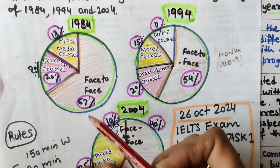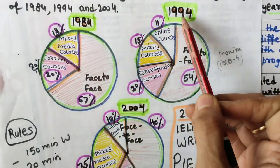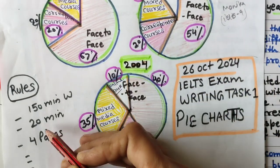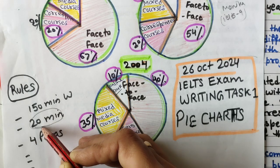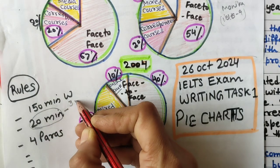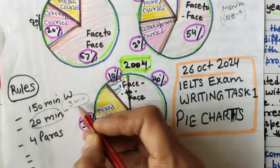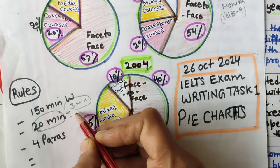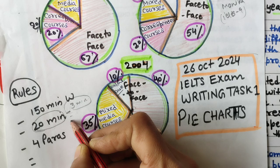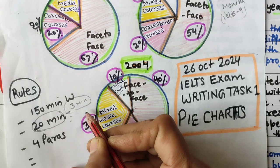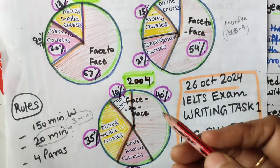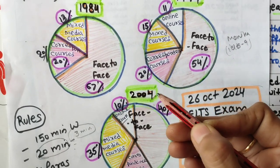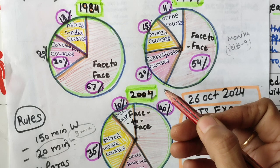We can see there are three pie charts: 1984, 1994, and 2004. You should know that you get only 20 minutes. Spend at least 3 minutes analyzing or planning your writing task 1, then write, and spend the last 2-3 minutes on proofreading — rereading your essay to catch your own grammatical mistakes and errors.